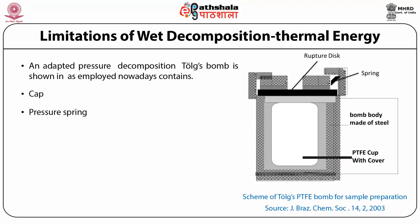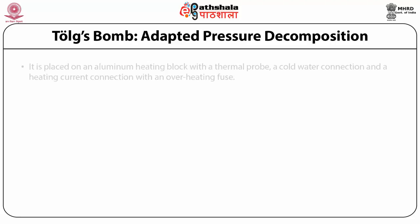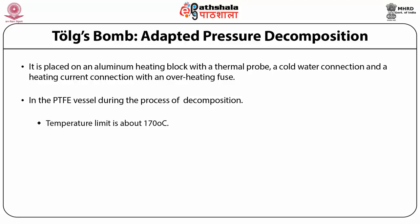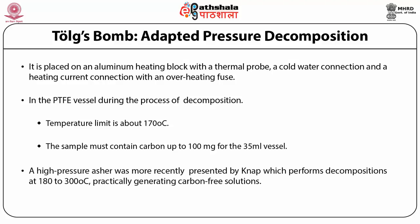A small sample mass along with acid or a mixture of acids is introduced into the pressure container. Increased temperature increases the decomposition rate. These are especially used for trace element analysis in organic, biological, and inorganic samples, alloys, metals, and minerals. The Tög bomb includes parts such as a cap, pressure spring, metal lid, PTFE lid, PTFE insert, and a pressure vessel. The apparatus is placed on an aluminum heating block with a thermal probe, cold water connection, and heating current connection with an overheating fuse — if overheated, the fuse trips and shuts off. The temperature limit in the PTFE vessel is about 170 degrees centigrade, and the sample must contain 100 milligrams of carbon per 35 ml vessel.